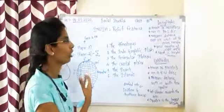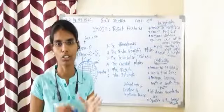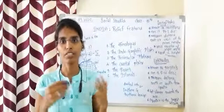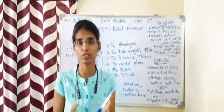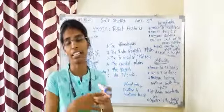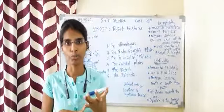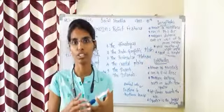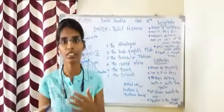In our first paper, the first topic is India Relief Features. India is a vast country with different kinds of landforms. We will learn what types of landforms exist, how they are formed, and the location of India. In the remaining lessons, we will be learning about rivers, population, economy, globalization, temperature, climate, and different factors of India.